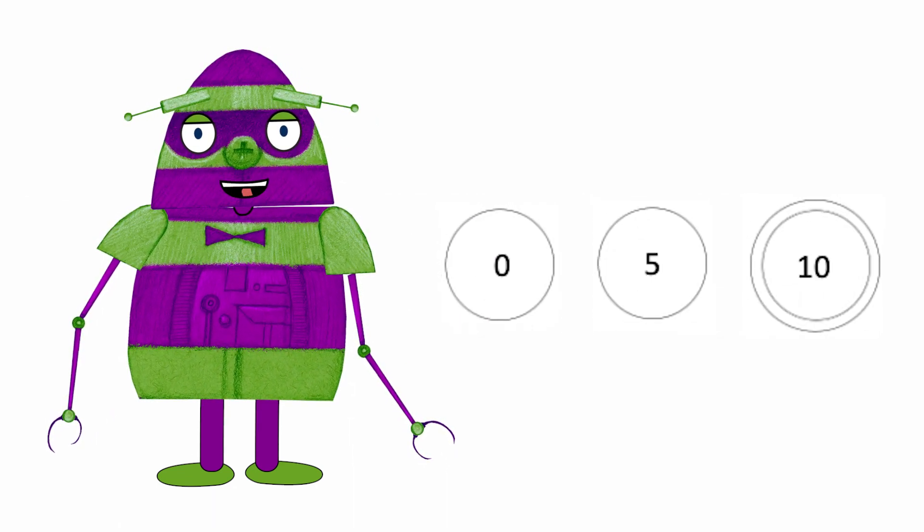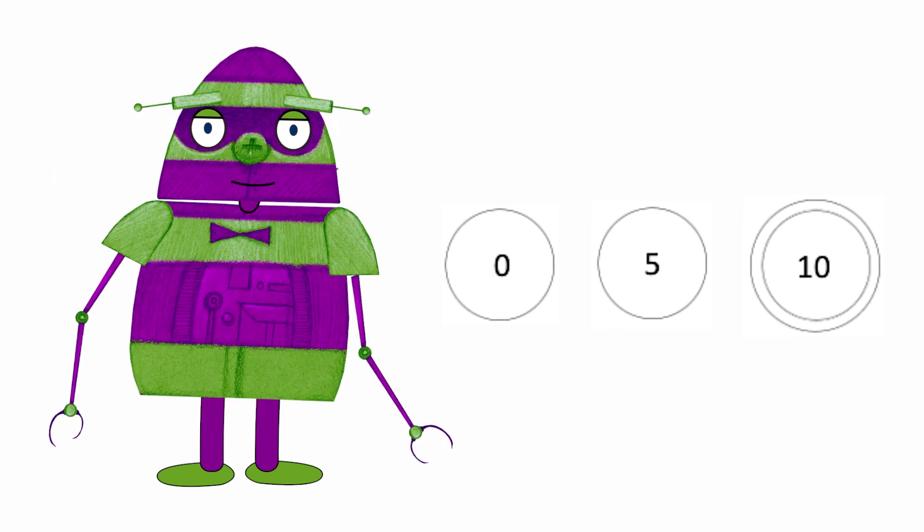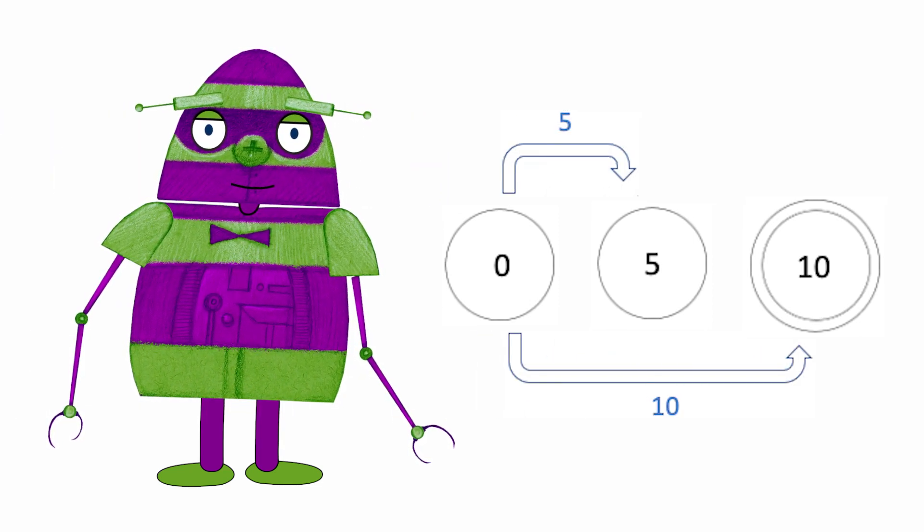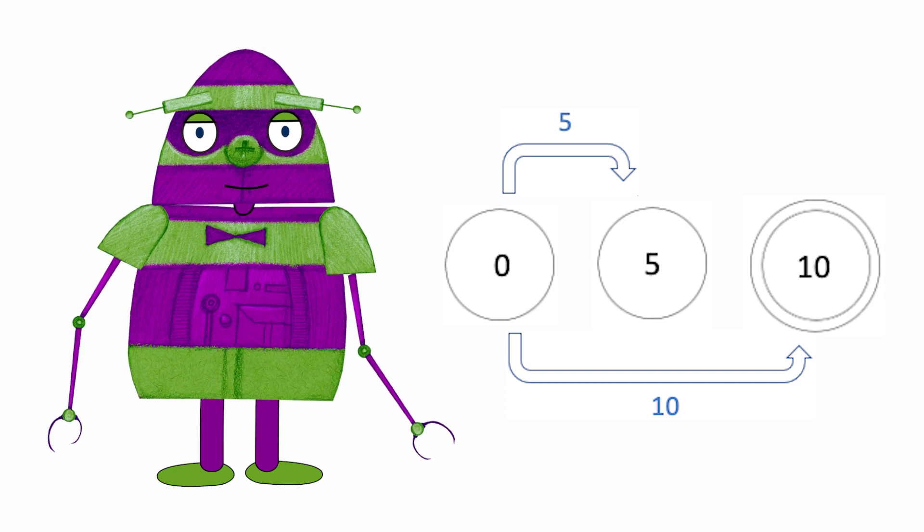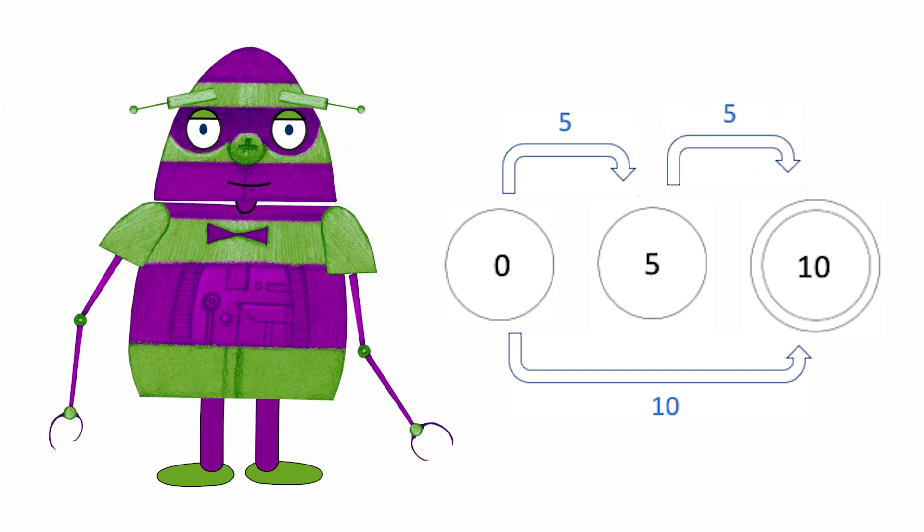From the state of 0 cents, the possible transitions would be 5 and 10 cents. From the state of 5 cents, the only possible transition would be to 10 cents.